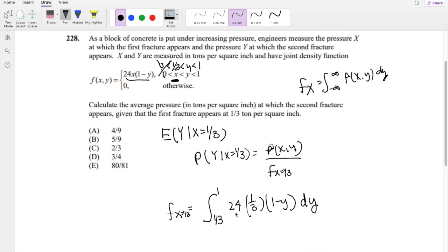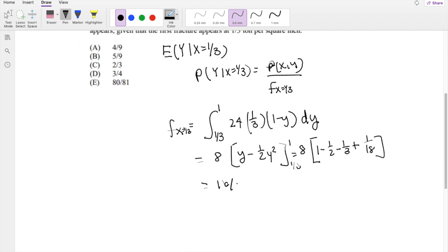So then this is equal to, I'm going to take the constant out, eight. And when I solve in terms of Y, I get Y minus one half Y squared. Evaluating from one to one third, you get the whole thing is times eight, one minus one half, minus one third, plus one over eighteenth. This is equal to 16 over nine. All right, so we got the denominator.